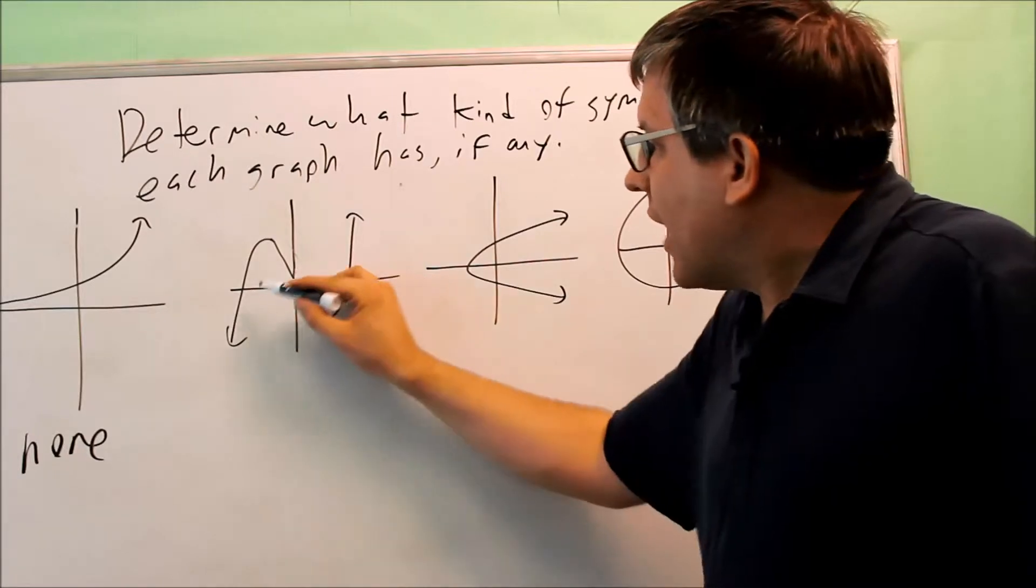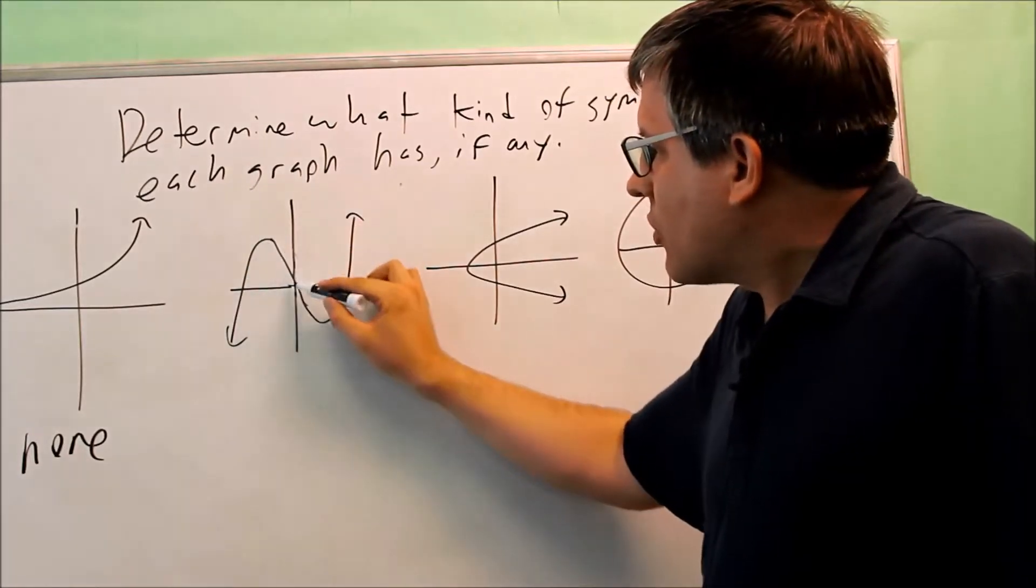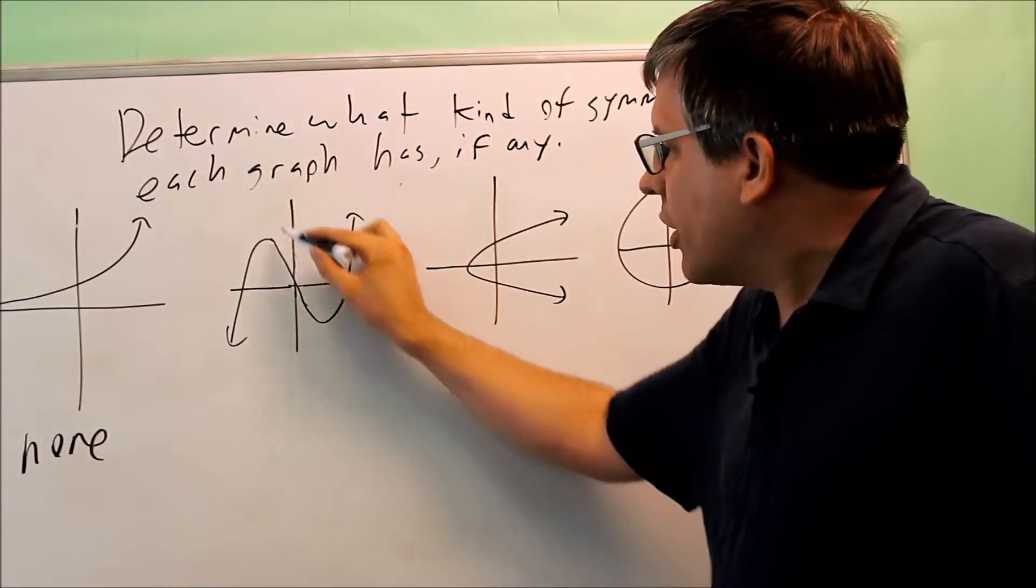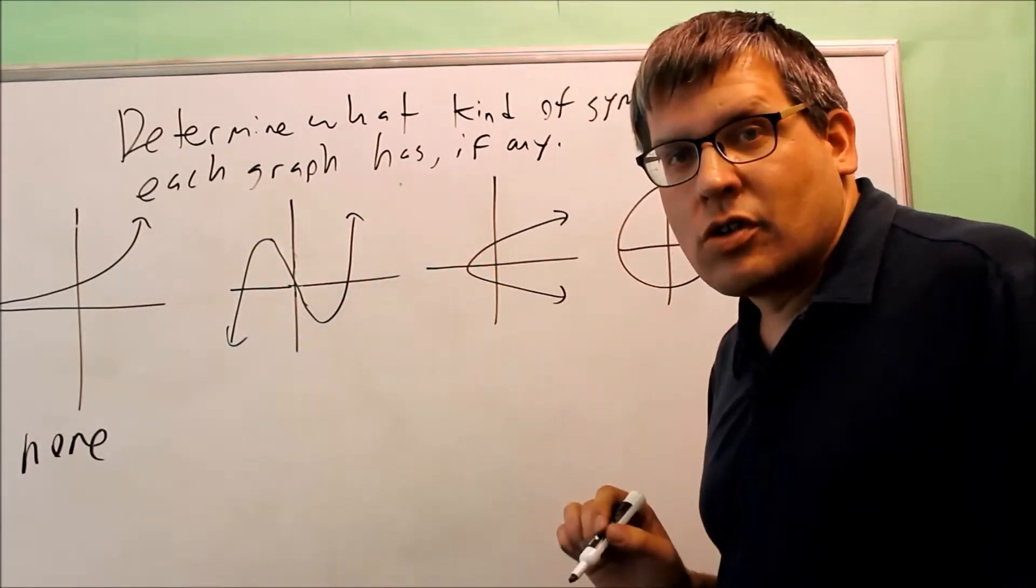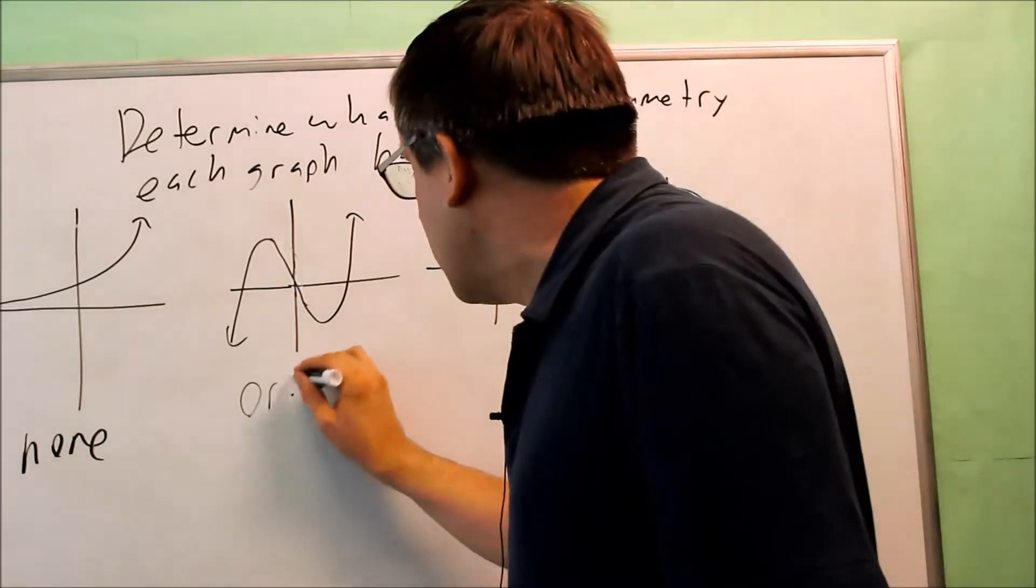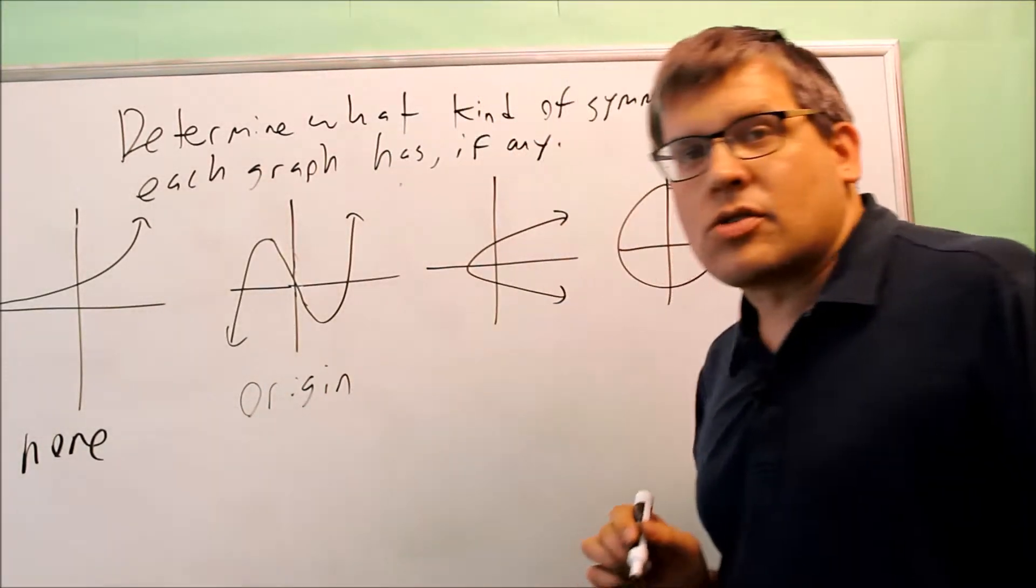Now for origin symmetry, I notice that I have this and this appearing in opposite quadrants, so like a mirror image of each other, just like this line and that line are mirror images. So that's going to tell me that it does have origin symmetry.